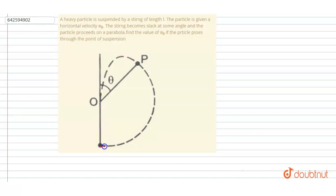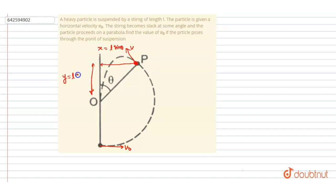If this particle is having v naught here, it has some velocity v at the point where the string becomes slack. The condition is that this particle should pass through the point of suspension when it proceeds in a parabolic path. The horizontal distance to travel is l·sinθ and the vertical distance is l·cosθ. The time to travel is l·sinθ divided by v·cosθ, since the horizontal component of velocity is v·cosθ.